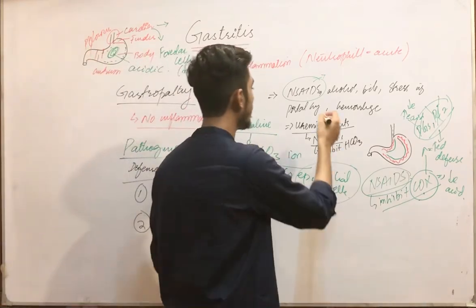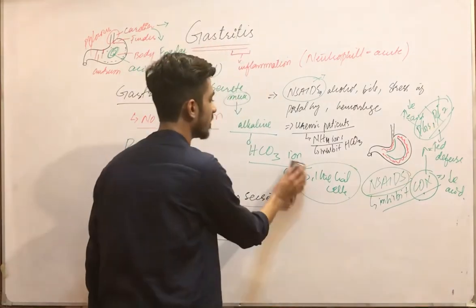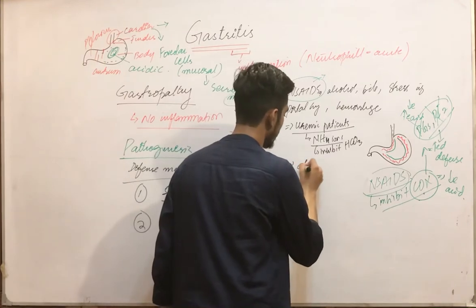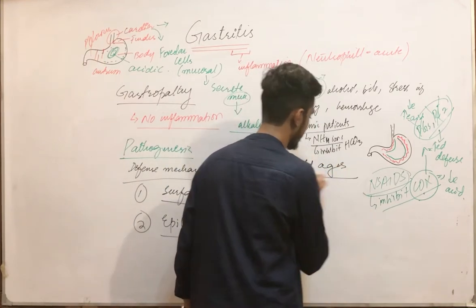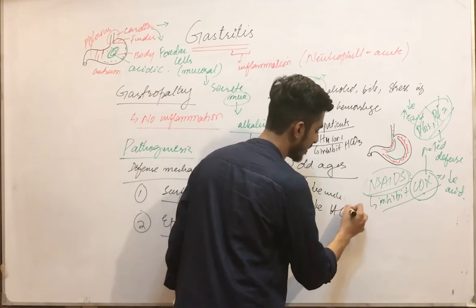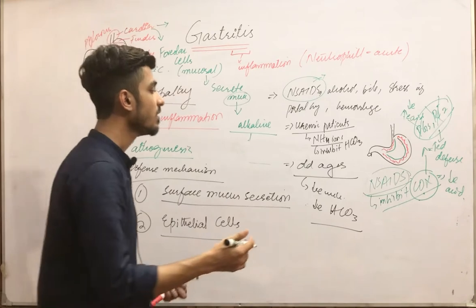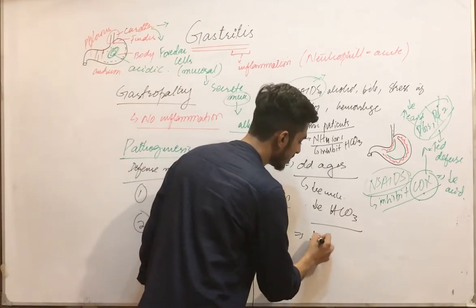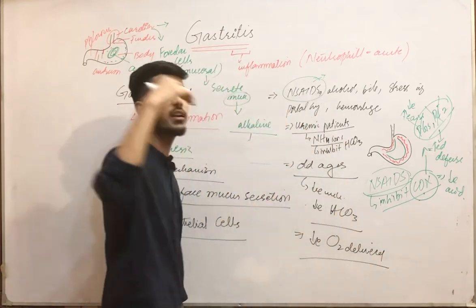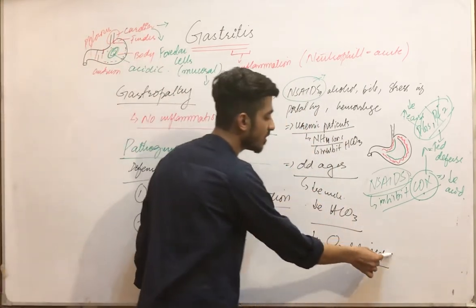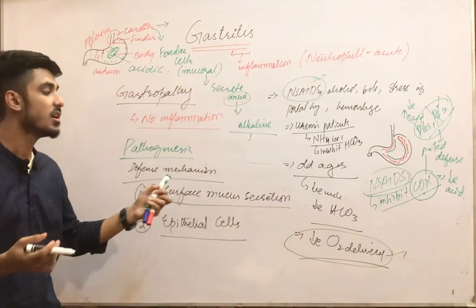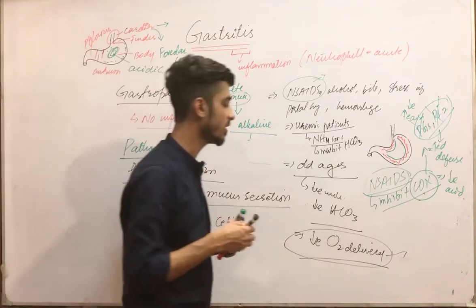In old age, there is also an increased risk of gastric injury because of decreased mucous secretion and decreased bicarbonate ion secretion. Additionally, decreased oxygen delivery — for example at high altitude — may also result in gastric injury, gastritis, or gastropathy.